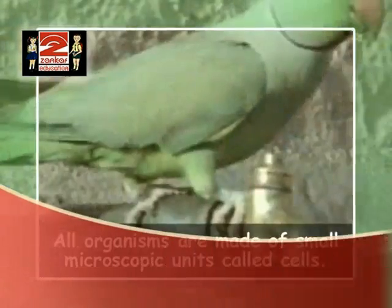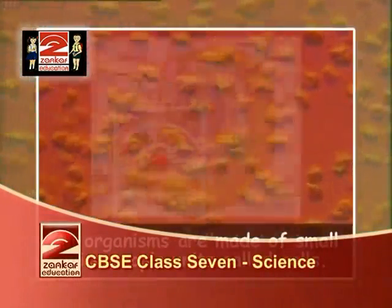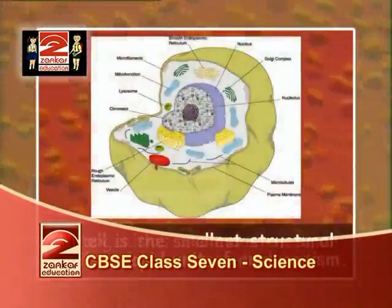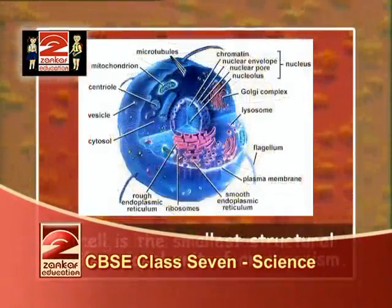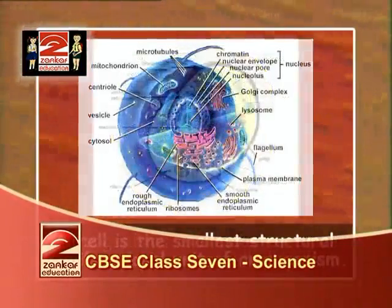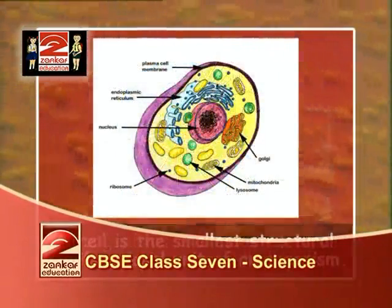All organisms are made of small microscopic units called cells. A cell is the smallest structure and functional unit of an organism.